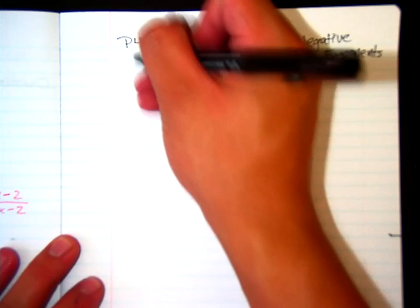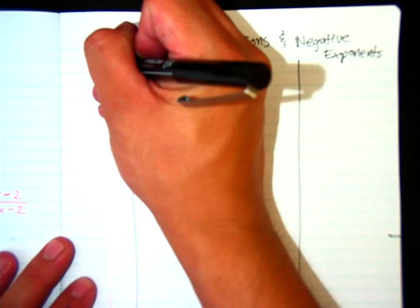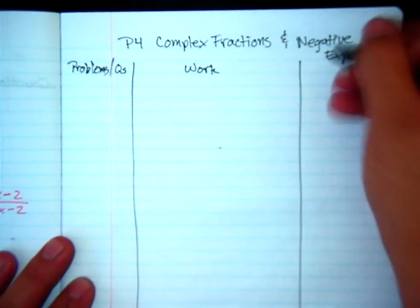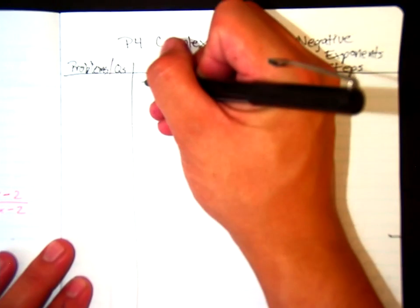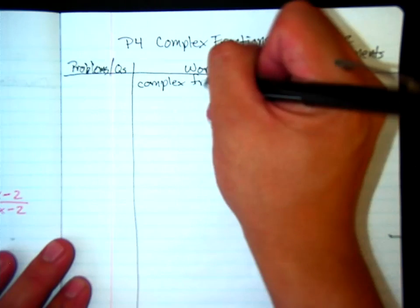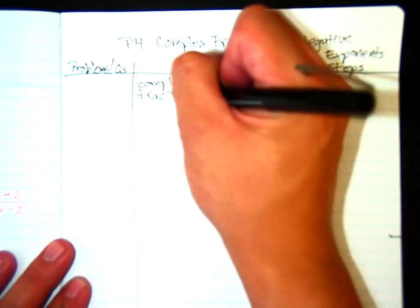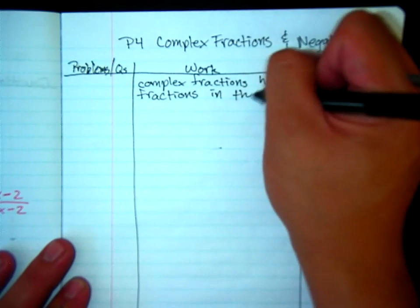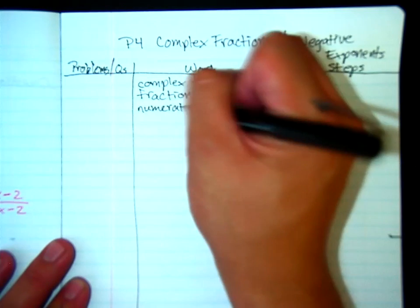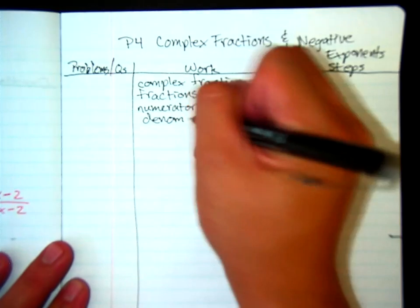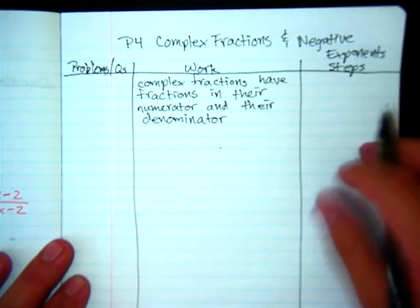So first off, let's go ahead and divide our page into our three columns. Leave yourself plenty of room for the middle space. Of course, as always, we have problems and questions. We have our work. And we have our steps. Okay, so the first thing that I want to make sure that you guys write down is that complex fractions have fractions in their numerator and their denominator. So really, it's like a fraction and a fraction on top of a fraction. And it's going to look a bit messy. And our goal is to simplify it, to reduce it into one fraction.